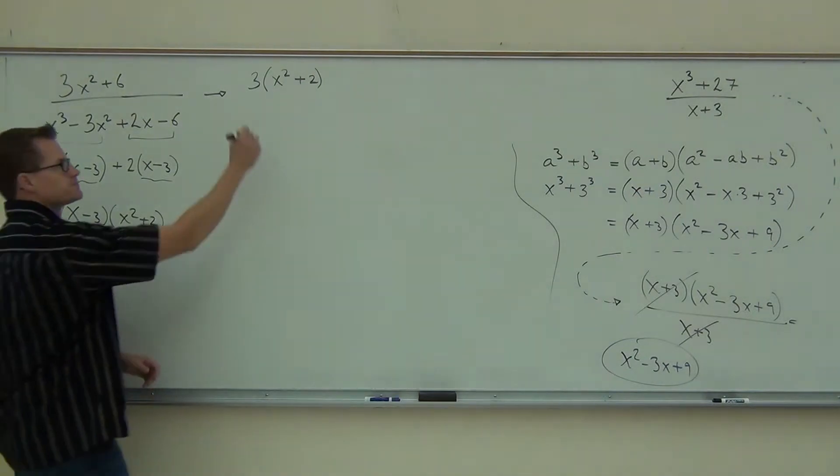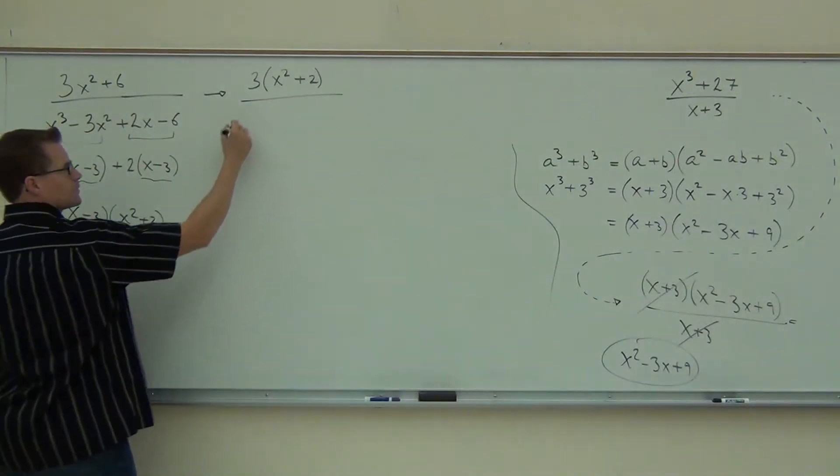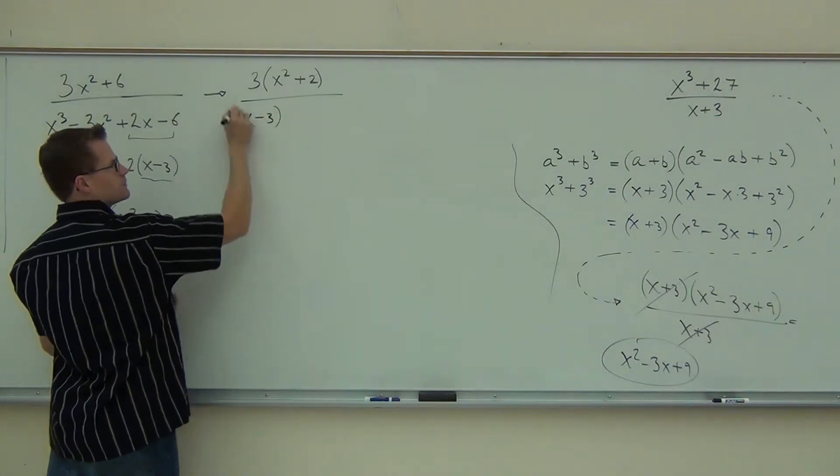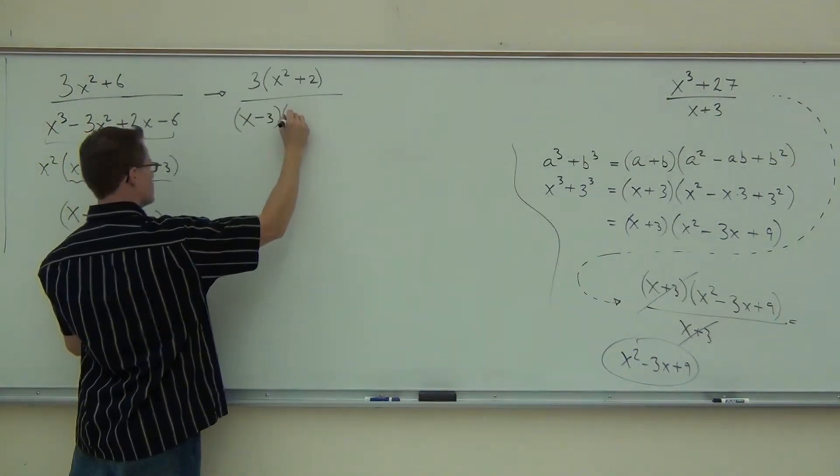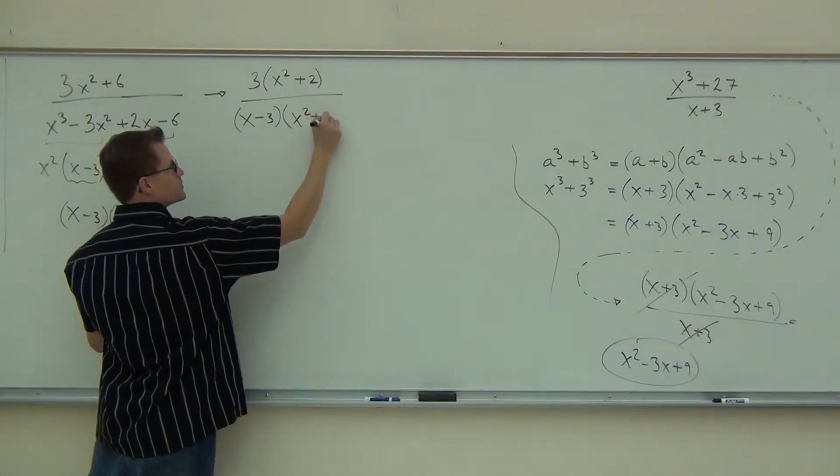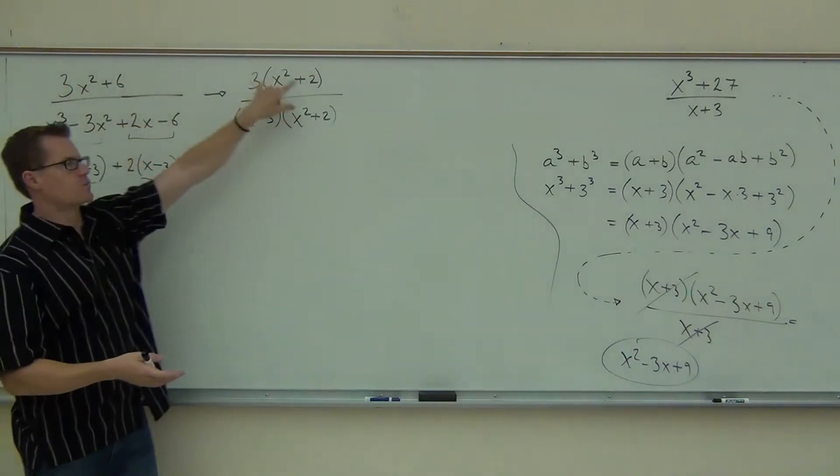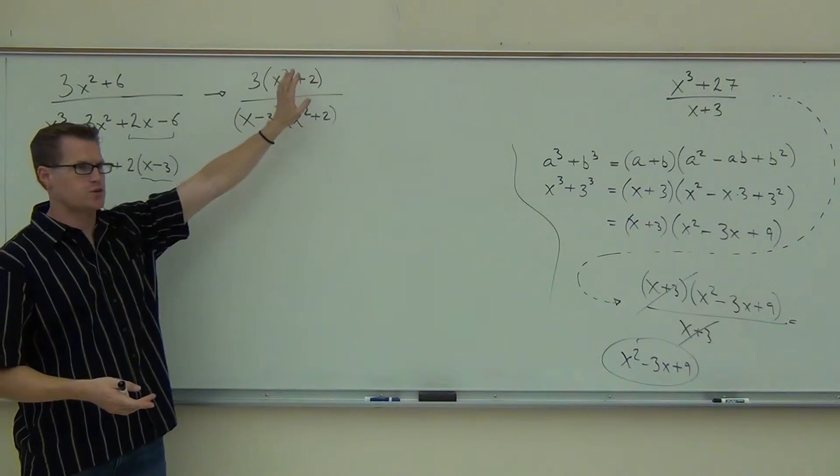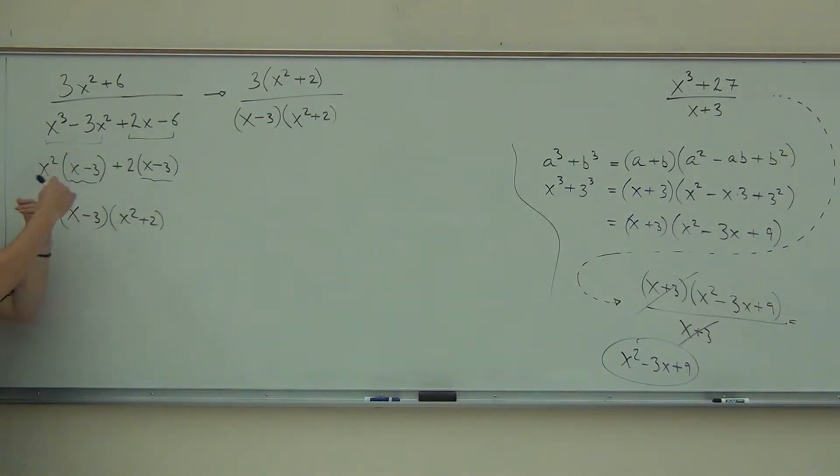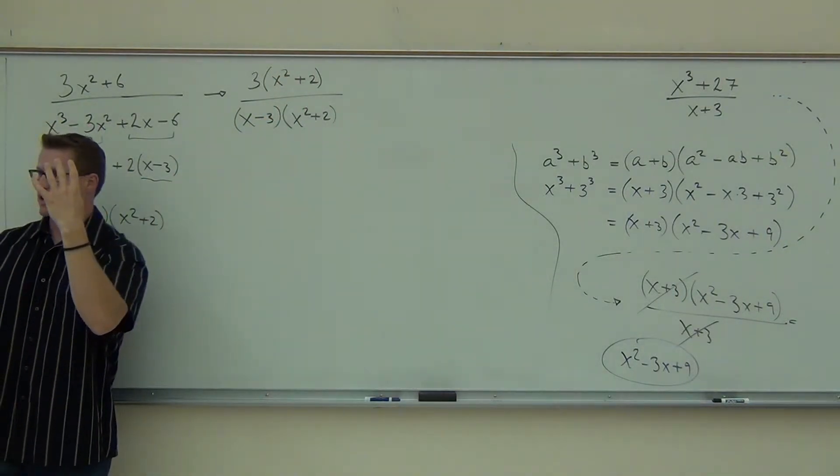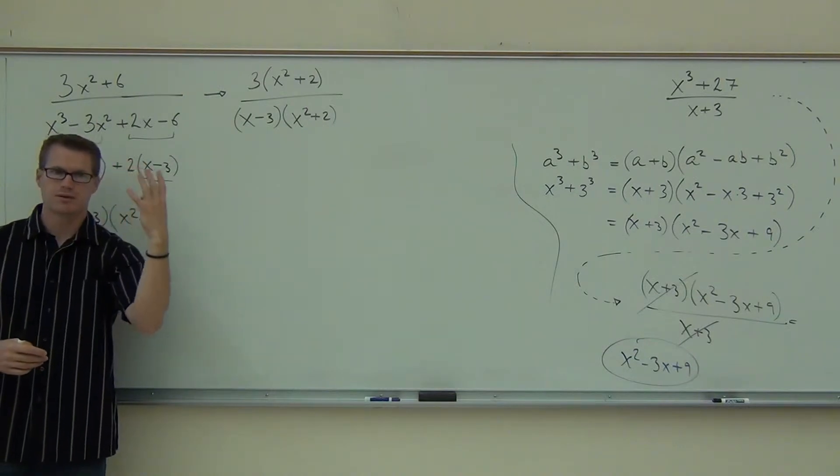So on our denominator, we have our x minus three. X squared plus two. So just a little recap. Out of the numerator, the only thing we can do is factor a three, and we're done with the numerator. There's nothing else we can do. On the denominator, whenever you see four terms, the thing you're going to try to do is factor with grouping. That's it.